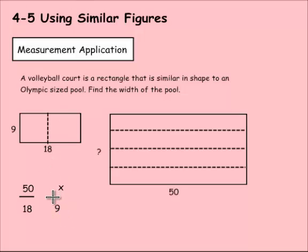And this is really important. Notice I had the X on top because I had the pool 50 on top over here. So both the volleyball court numbers are on the bottom. So now I can cross multiply and solve.